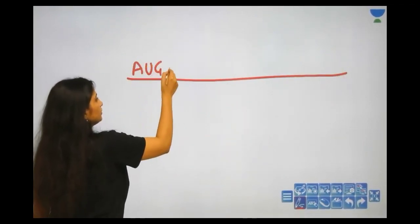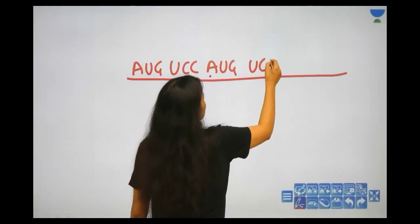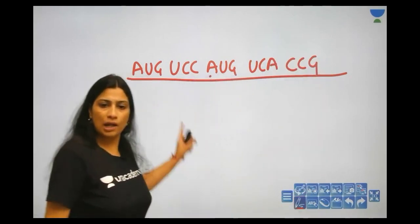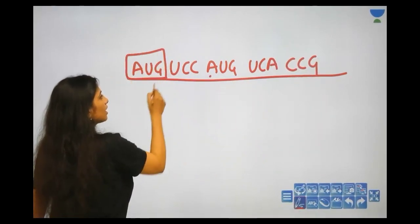What is this? AUG, UCC. AUG, UCA, UCG. I have to take out which sequence of this. AUG is the code? Methionine.